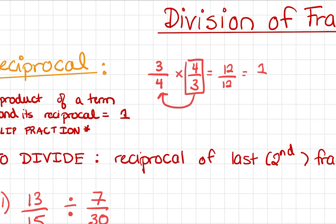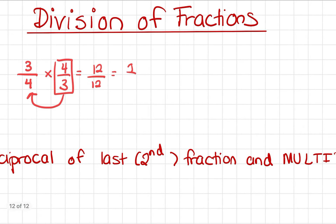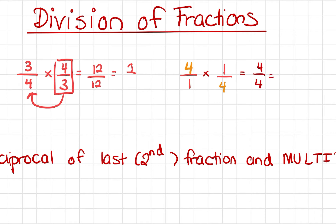The reciprocal just means flip the fraction. The reason I told you at the very beginning that every number is a fraction with a denominator of 1 is because if you need to find the reciprocal of the number 4, you should know it's actually 4 over 1, and then the reciprocal is 1 over 4. If you multiply 4 over 1 by 1 over 4, you get 4 over 4, which equals 1. So 1 over 4 is the reciprocal of 4.